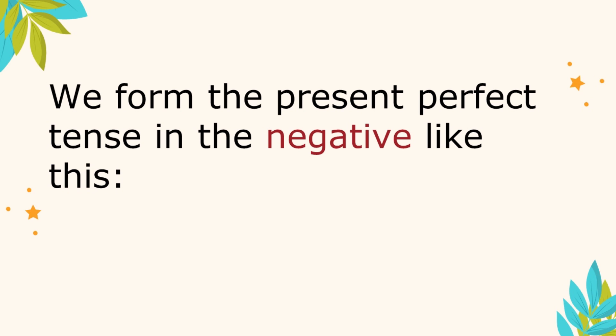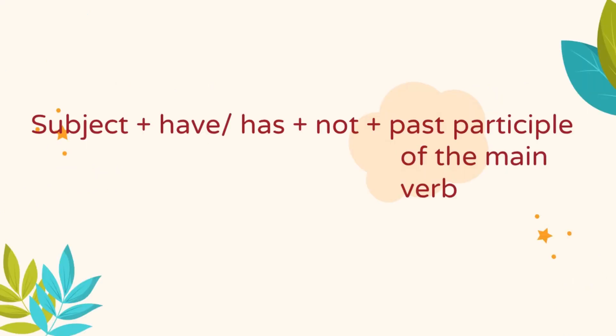We form the present perfect tense in the negative like this: subject plus have or has plus not plus the past participle of the main verb.